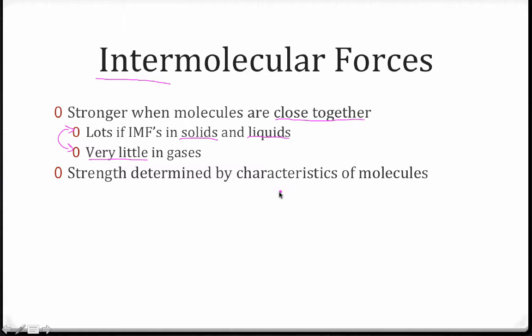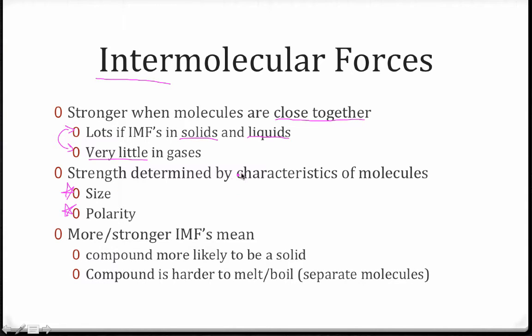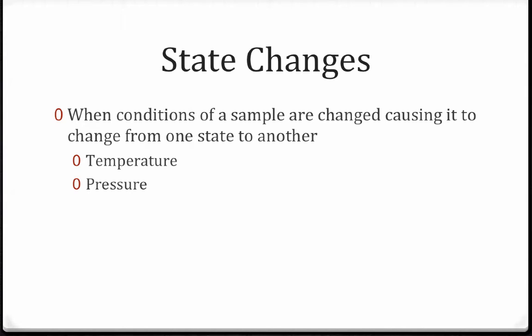Their strength can also be determined by the characteristics of the molecules themselves. The size of the molecule, and probably more importantly, the polarity of the molecule, all determine how strong those intermolecular forces can be. When you have more and stronger intermolecular forces, this again affects the behavior of the compound itself. The compound that has more intermolecular forces is more likely to be a solid at room temperature. And these compounds typically are more difficult to melt and boil, because melting and boiling is really talking about separating molecules from one another. Going from the solid and liquid state and transferring into the gaseous state means going from lots of intermolecular forces to very little. The stronger those intermolecular forces are, the more difficult melting and boiling ends up being. All of these topics are things that we'll discuss a lot more later in the chapter when we focus specifically on solids and liquids.